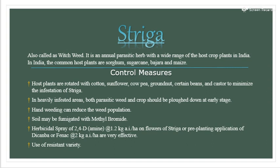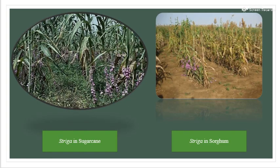Use of resistant variety is also recommended. This is an example of Striga on sugarcane and Striga on sorghum.